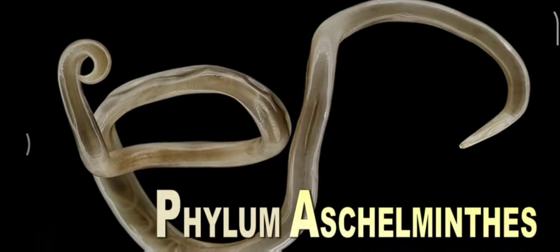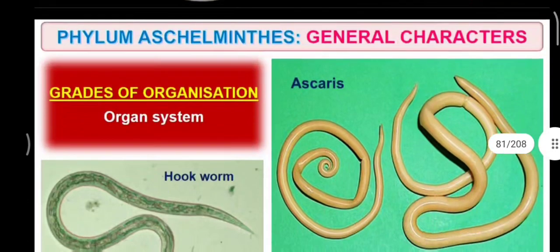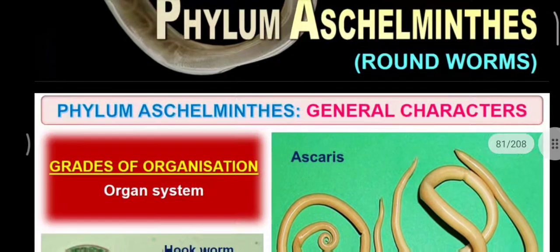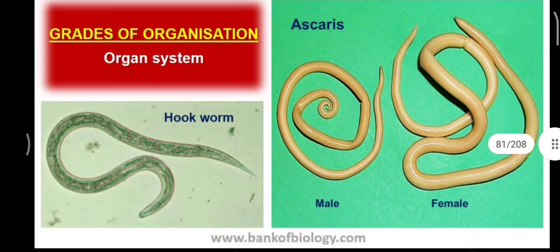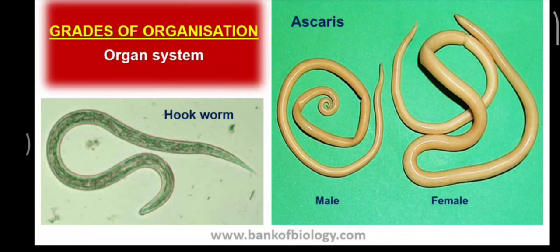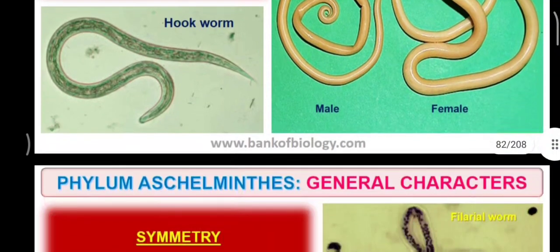Dear students, we will go for the next phylum, Aschelminthes. These are also called Nematode Helminthes, and are commonly known as roundworms. These are the general characters of Aschelminthes. They undergo the organ system of organization. In this example, Ascaris is called the roundworm, and it looks round in shape.